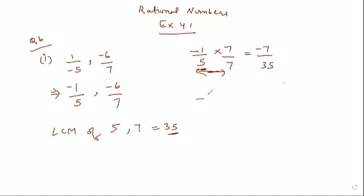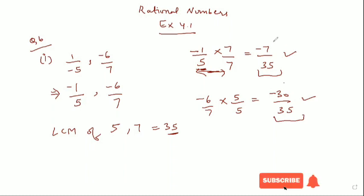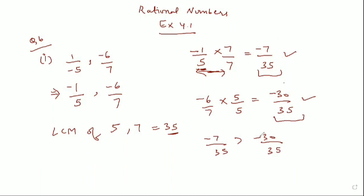Now come to minus 6 by 7 — equate the denominator, it will be multiplied by 5, giving minus 30 by 35. Now you can see two new fraction numbers. Since the denominators are equal, we can tell which number is greater by looking at the numerators. Minus 7 by 35 is greater than minus 30 by 35 because in negative numbers, the smaller number is larger and the bigger number is smaller. So minus 7 by 35 means 1 by minus 5 is greater than minus 6 by 7. This is our answer.